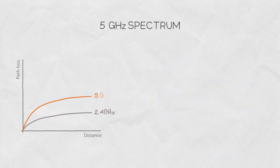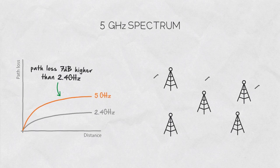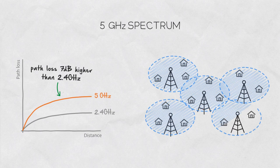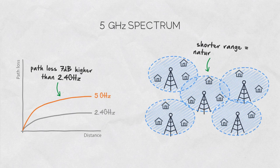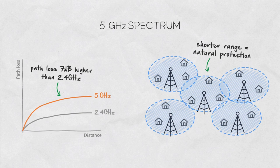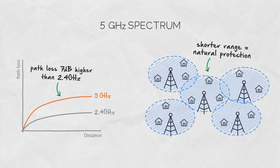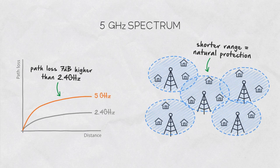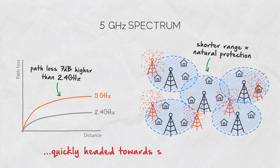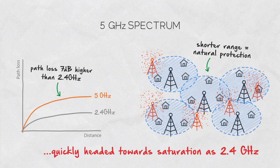At 5 GHz, the path loss is about 7 decibels higher, so the RF waves do not travel as far, which can be an advantage acting as a natural protection against interference. But despite the shorter achievable distances, the 5 GHz spectrum is quickly headed towards the same interference saturated state as the 2.4 GHz networks.